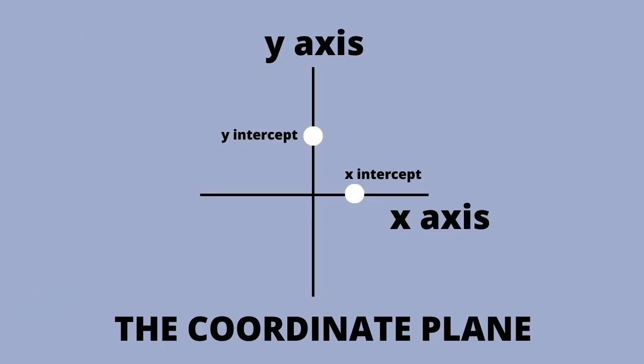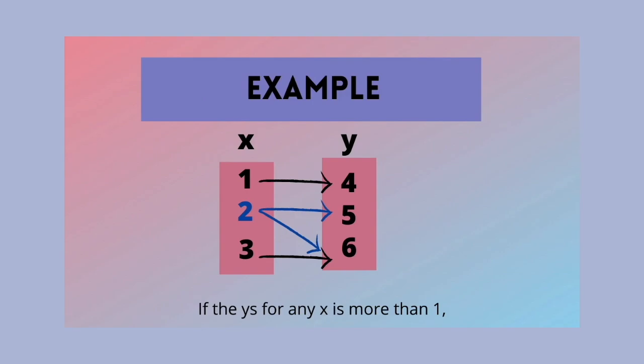On the coordinate plane, the x-axis is where the independent variable is and the y-axis is where the dependent variable is. The x-intercept is where the function intersects the x-axis; the y-intercept is where the graph intersects the y-axis. But if the y's for an x is more than one, you do not have a function.